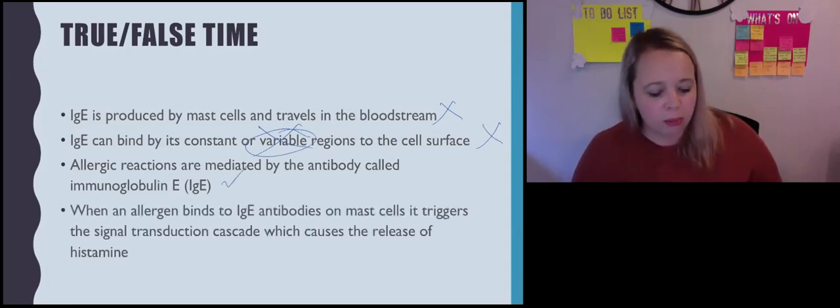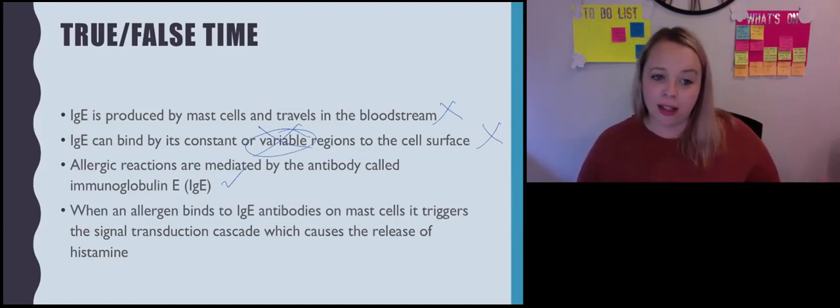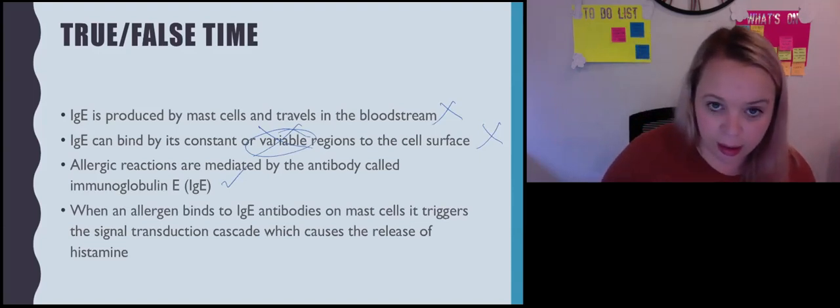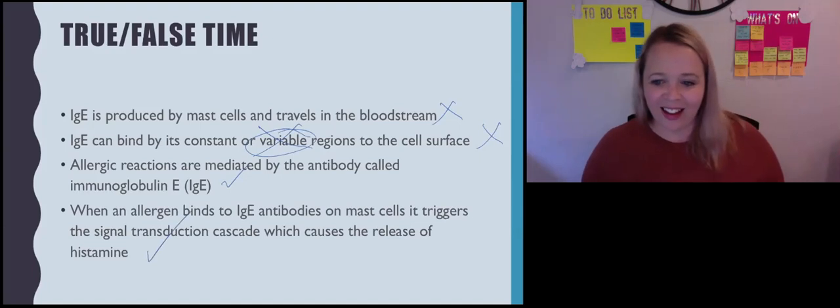And the last one, when an allergen binds to IgE antibodies on mast cells, it triggers a signal transduction cascade which causes the release of histamine. There's a lot of extra detail in here, but let's see if you get it right. Now, ready? Yes.